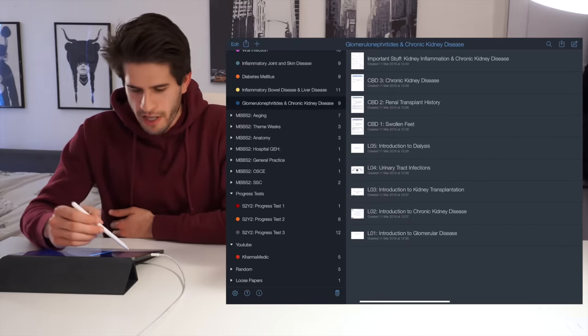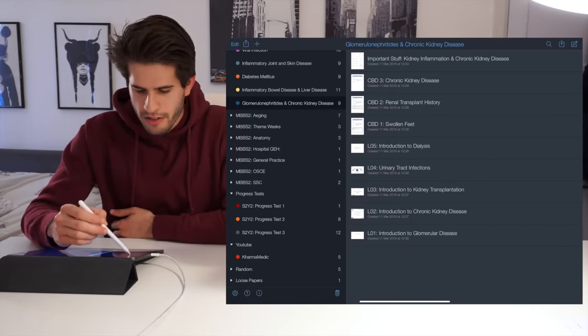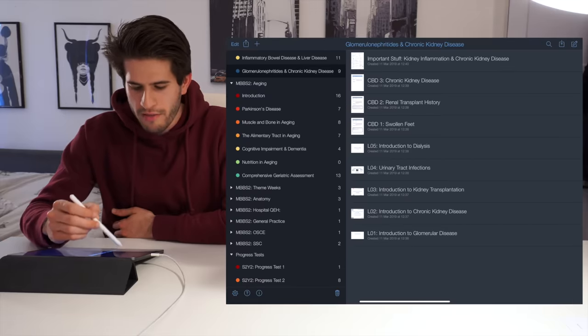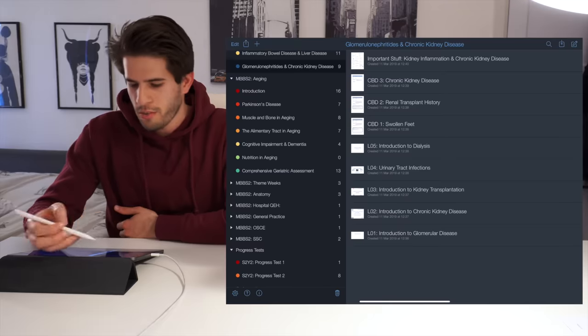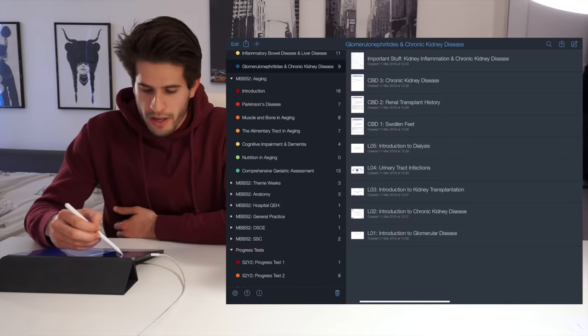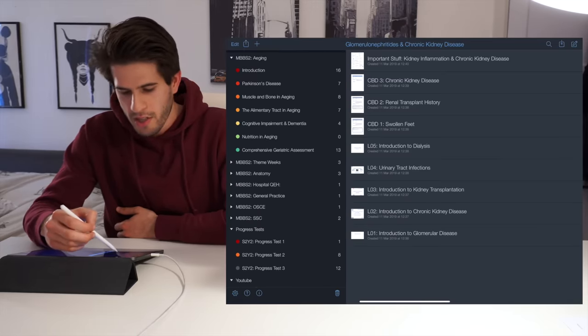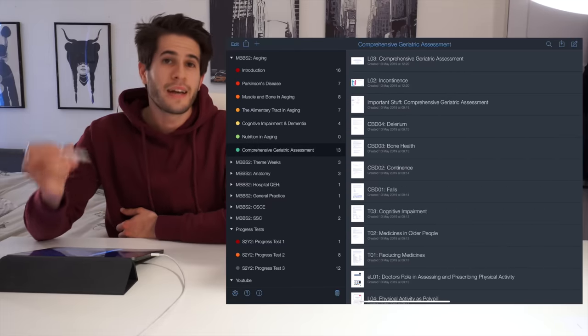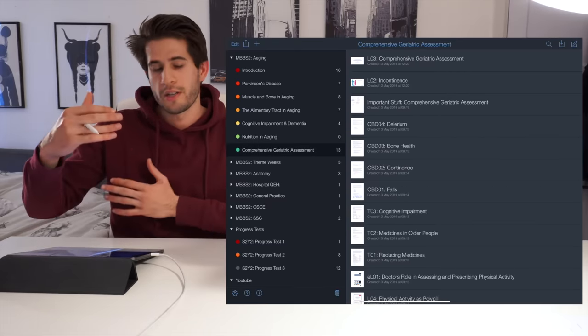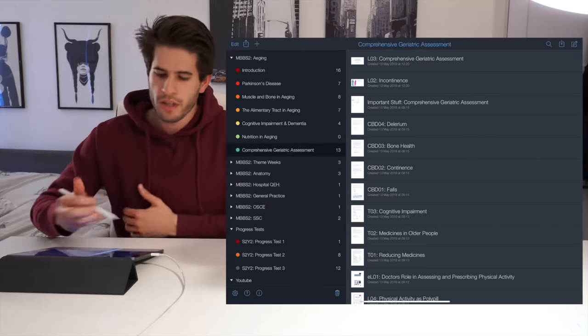Let's talk about aging specifically for a second. So once you've gone into that divider you'll see here that I have all of my different subjects within that divider. So within the big topic of aging we have the introductory week, then Parkinson's disease, muscles and bone in aging, the elementary tract, cognitive impairment, nutrition etc. And in each one of those smaller subjects I have all of my individual lectures.